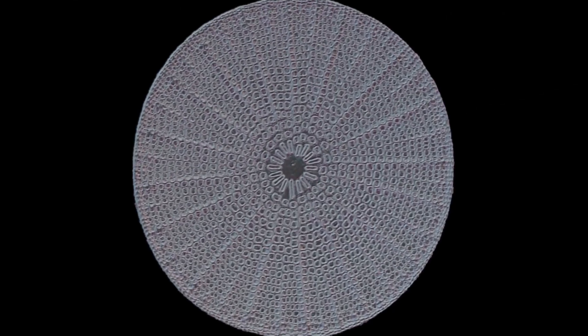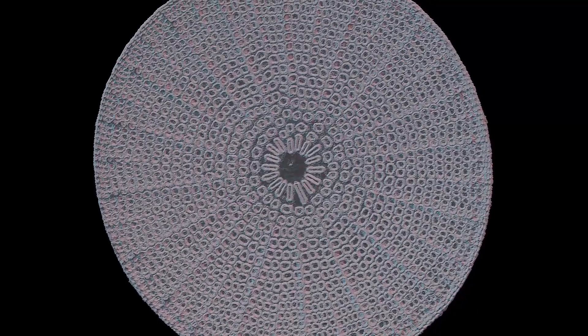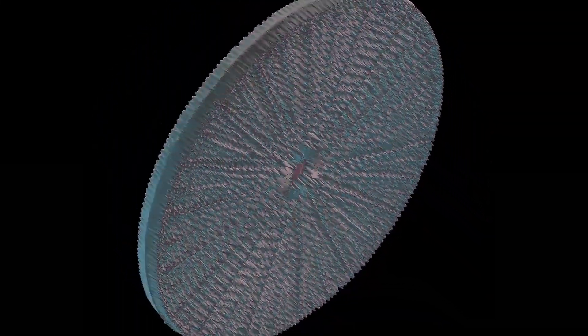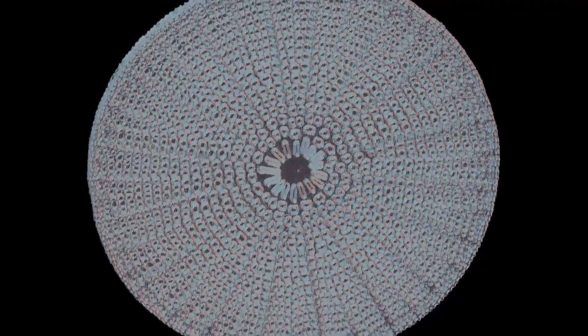Each species has a distinct pattern of tiny holes in the cell wall, the frustule, through which they absorb nutrients and get rid of waste. Viewed under microscopes, diatoms show a huge variety of shapes, with many interesting and beautiful patterns.